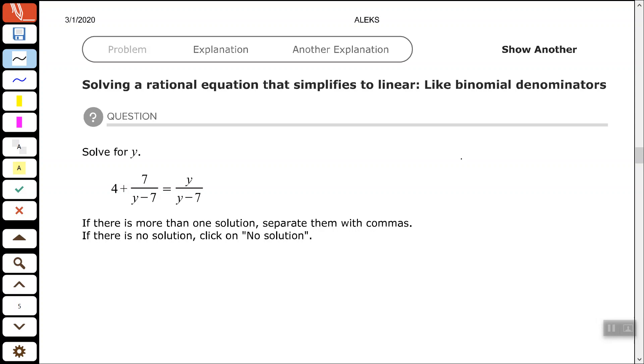So I noticed that I have variables in my denominator, I have the expression y minus 7, and it's the same denominator. So my excluded value will be found by setting y minus 7 equal to 0. So add 7 to both sides, so my excluded value is positive 7.